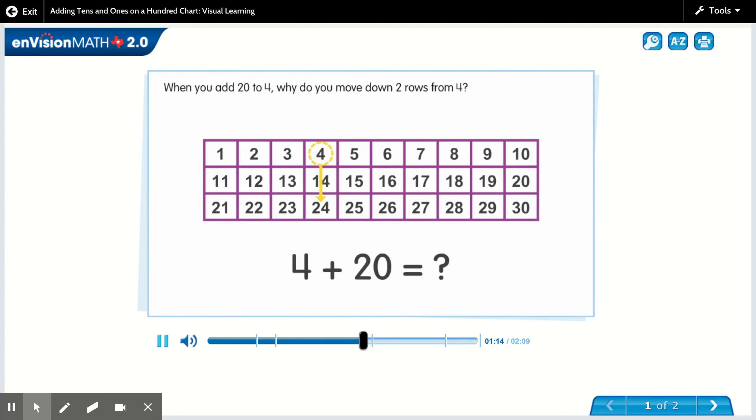For every ten you add, move down one row. Twenty is two tens, so move down two rows. When you add 20 to 4, why do you move down two rows from 4?